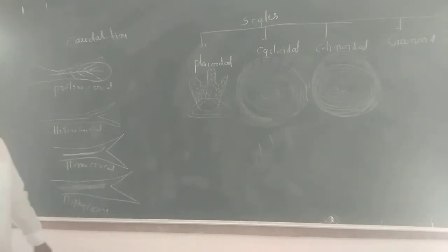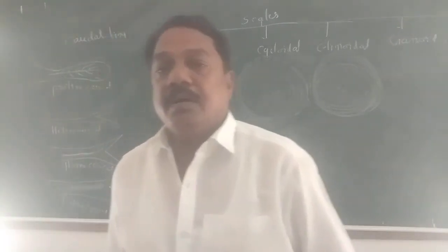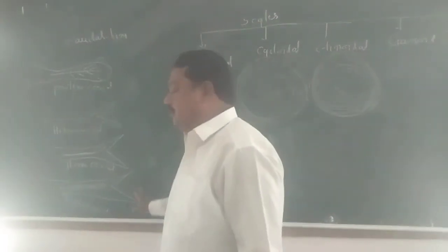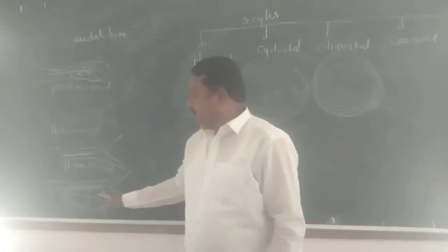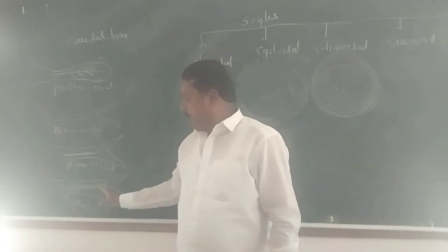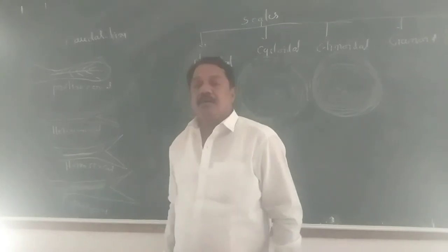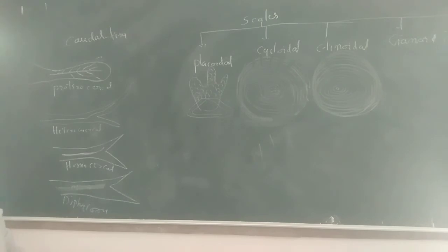Next, diphycercal caudal fin. In this diphycercal caudal fin, caudal fin is divided into equal lobes. Upper lobe and lower lobe are equal in size, but here the vertebral column is also not extended into upper and lower lobe, generally extends near to the lobes. This is externally as well as internally symmetrical.